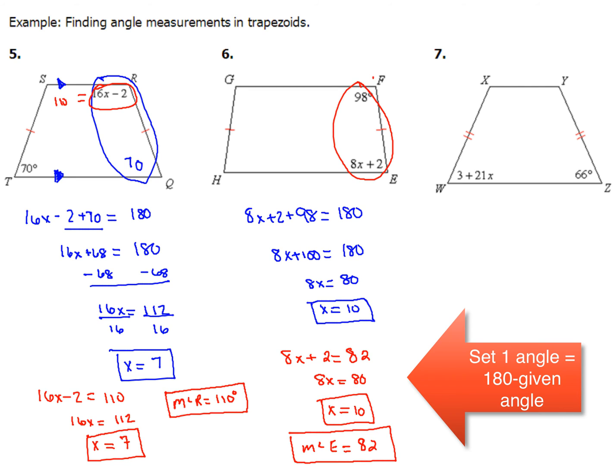or you could simply subtract 98 from 180 to come up with 82, and set 8x plus 2 equal to 82. When you're done, you get a value of 10 for x. Either way, the measure of angle e is going to be 82.